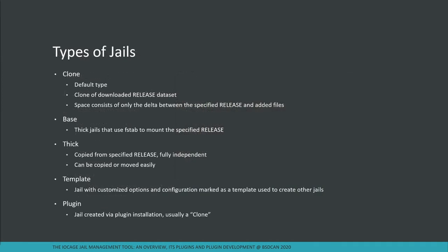Let's talk about types of jails. The most common and default type in IOCAGE is the clone jail — a clone of the downloaded release dataset. When you create a jail you specify the release: 12.1, 12.0, 11.2, whatever. Clone jails only use the space of the delta between the specified release and added files. Any file you add, remove, or modify takes up space, but the base file system shared across jails doesn't need to be duplicated.